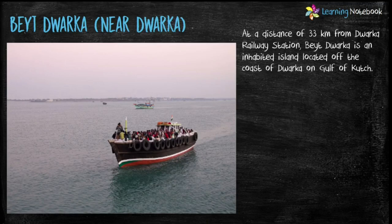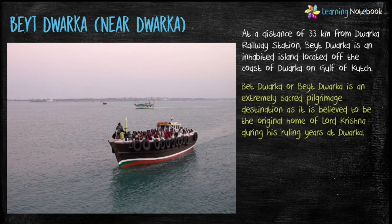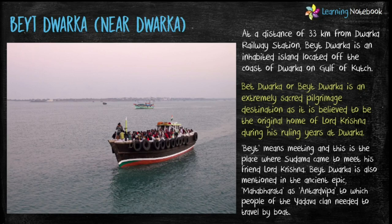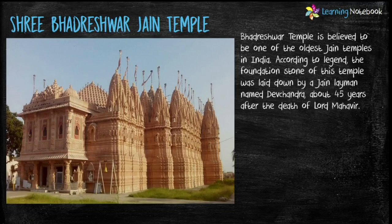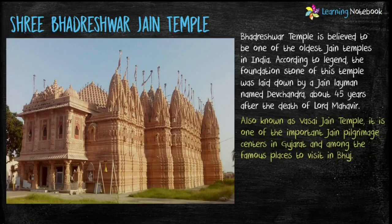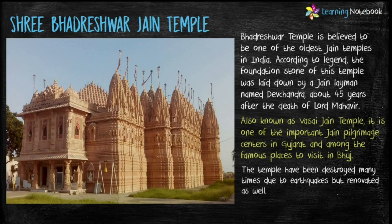Next religious place is Bet Dwarka. At a distance of 33 km from Dwarka railway station, Bet Dwarka is an inhabited island located off the coast of Dwarka on the Gulf of Kutch. It is an extremely sacred pilgrimage destination believed to be the original home of Lord Krishna during his ruling years at Dwarka. Next is Sri Bhadreshwar Jain Temple, located in Bhuj, one of the oldest Jain temples in India, also known as Versailles Jain Temple.